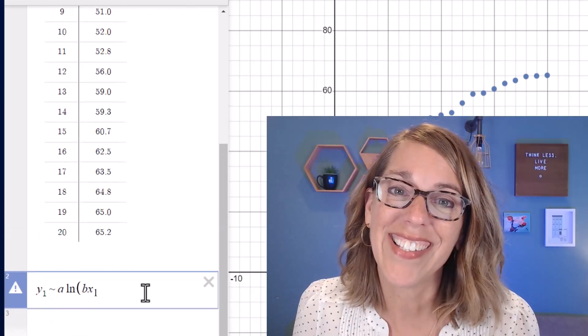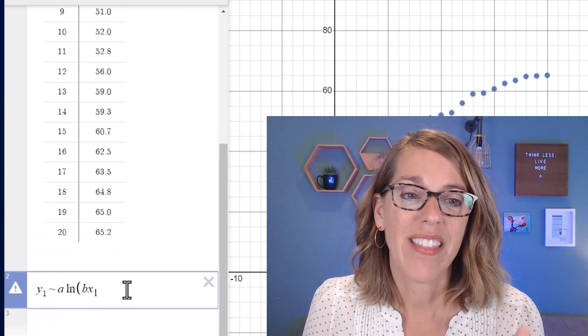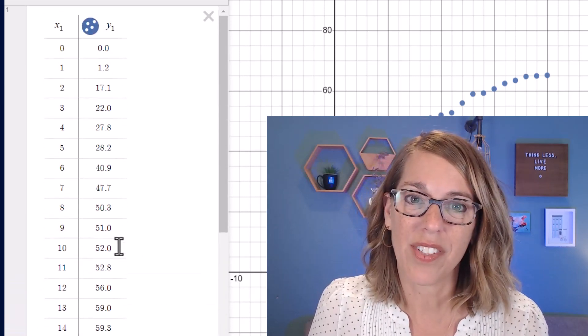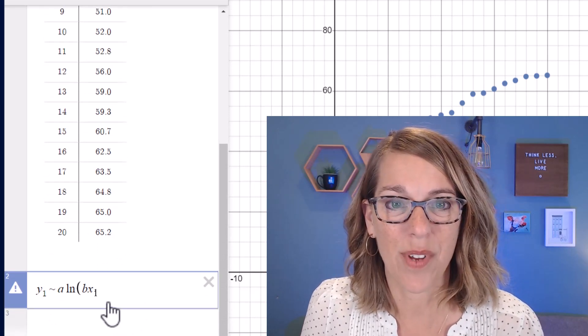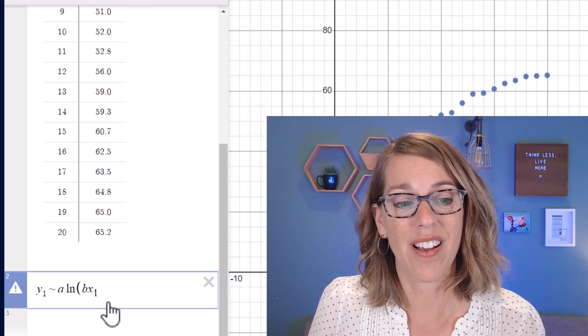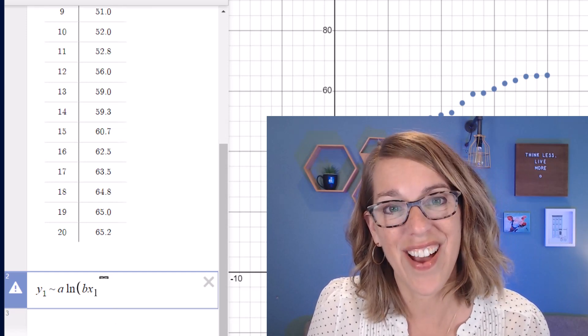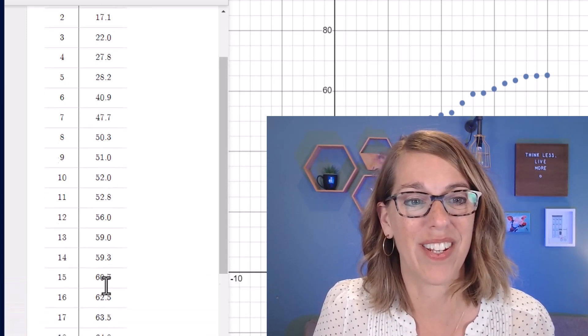But notice how it has not given me a regression equation. That's because all of the data values that you have here need to fit the domain of your regression. This is a natural log. Zero is not in the domain of the natural log.